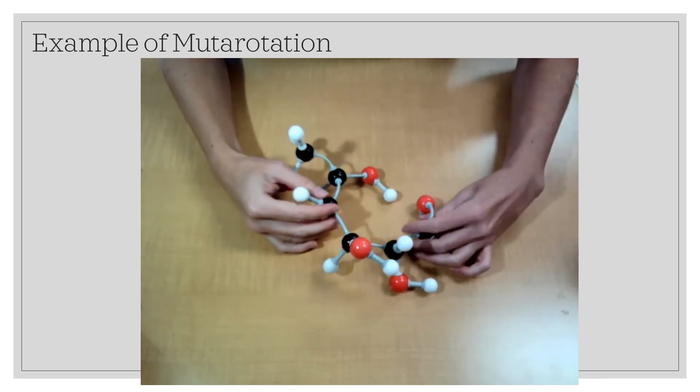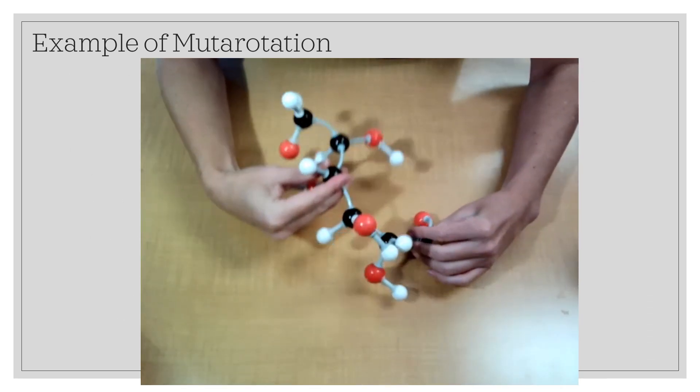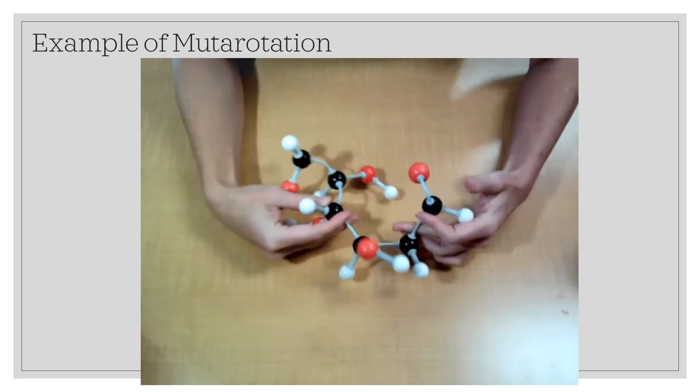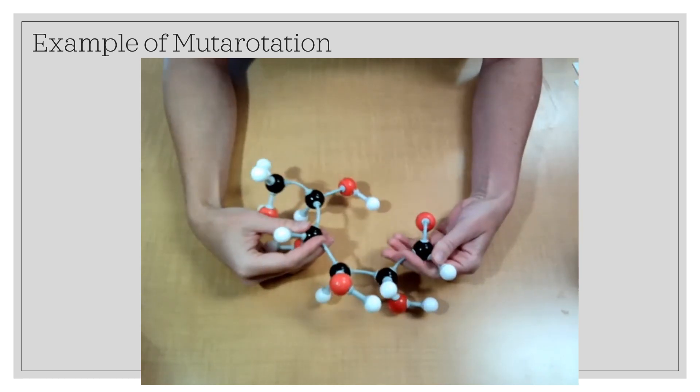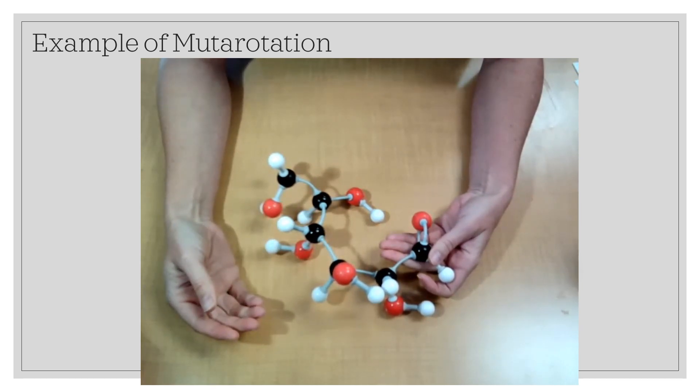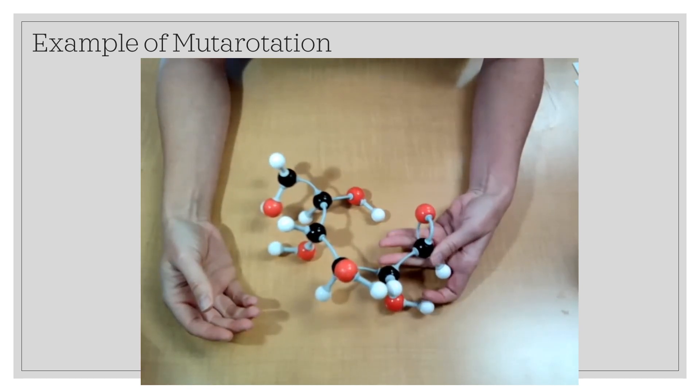So I know that you were really missing seeing this horribly long looking aldose, but we're going to talk about when you go from a Fisher projection to a Haworth projection, what I mean by forming an alpha anomer versus a beta anomer.